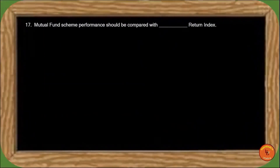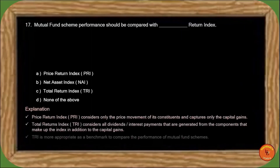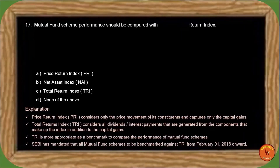Next question: Mutual fund scheme performance should be compared with which return index? Price Return Index only considers the price movement and capital gains of its constituents. Total Return Index, in addition to capital gains, also considers all dividends and interest that make up the index. TRI is more appropriate as a benchmark for mutual fund scheme performance. SEBI mandated that from 1st February 2018, all mutual fund schemes must be benchmarked against TRI. So the correct answer is option C, Total Return Index, TRI.